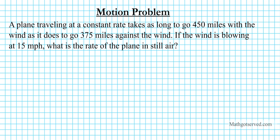In this video, we're going to go over an example on a motion problem. The question says: a plane is traveling at a constant rate. A plane traveling at a constant rate takes as long to go 150 miles with the wind as it does to go 25 miles against the wind. The wind is going at 50 miles per hour. What is the rate of the plane in still air?